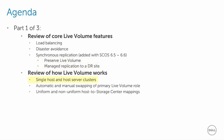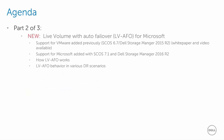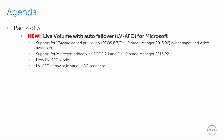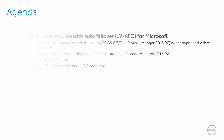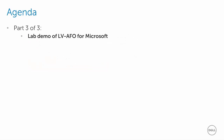Next, we'll review how Live Volume works with single and multiple hosts, how to configure automatic Live Volume role swapping, and explain the difference between uniform and non-uniform server mappings. In part two of three, we'll introduce the Live Volume with Auto Failover feature enhancement now extended to support Microsoft environments, including a deep dive into how the feature works given some common disaster recovery scenarios. In part three, we'll show how Live Volume with Auto Failover for Microsoft works in a live lab environment.